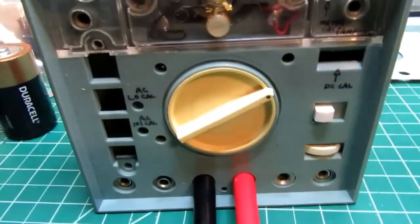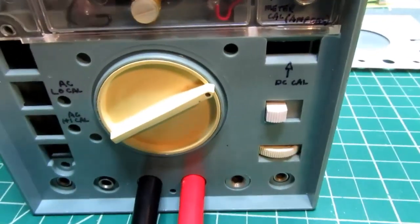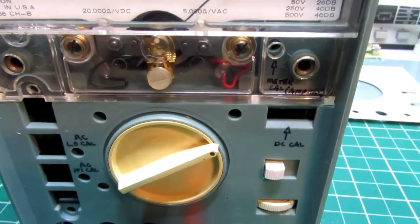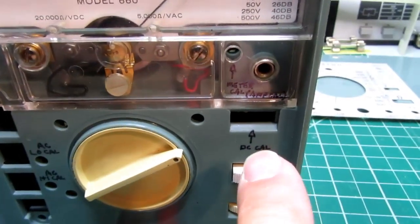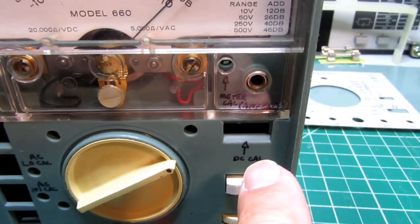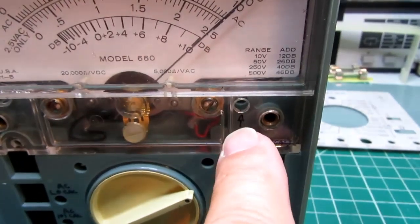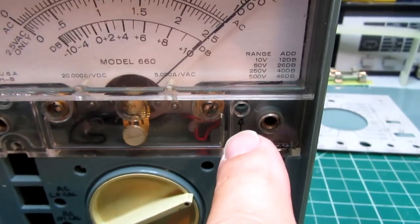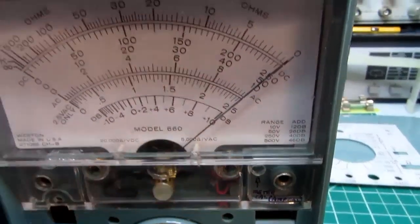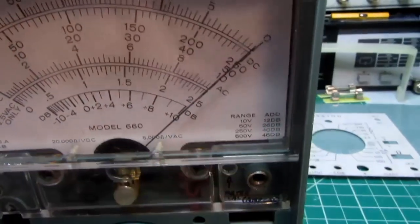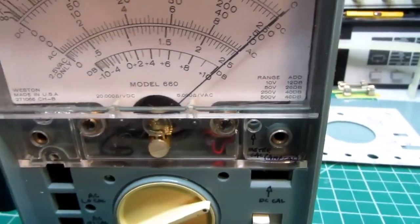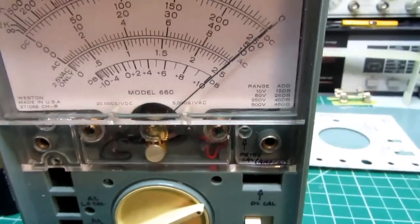I forgot that the DC cal pot is also part of the equation. I can't easily bypass that, so what I did is set this to the middle of its range and then readjusted the first trim pot with a 10-volt verified signal to get a 10-volt reading. Hopefully that'll make a little more sense. I didn't have to change it much.